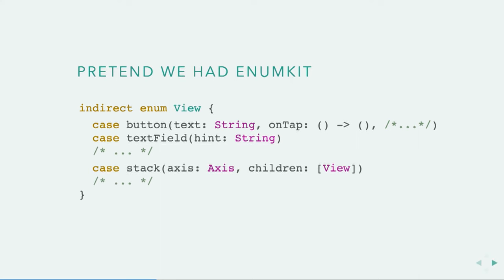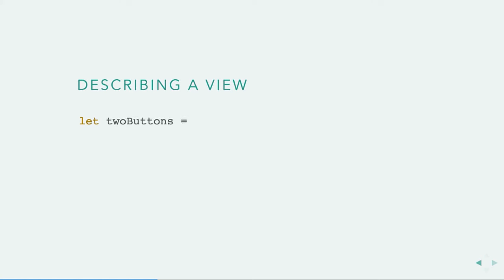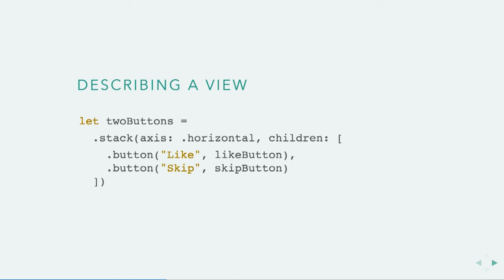The views that contain other views, like a stack view, explicitly take a children parameter, where we have an array of views. So let's say we wanted to describe those two buttons at the bottom of our mockup. That's in a stack view. So we can make a stack view, which has children. Inside the stack view, we stick a like button and a skip button.